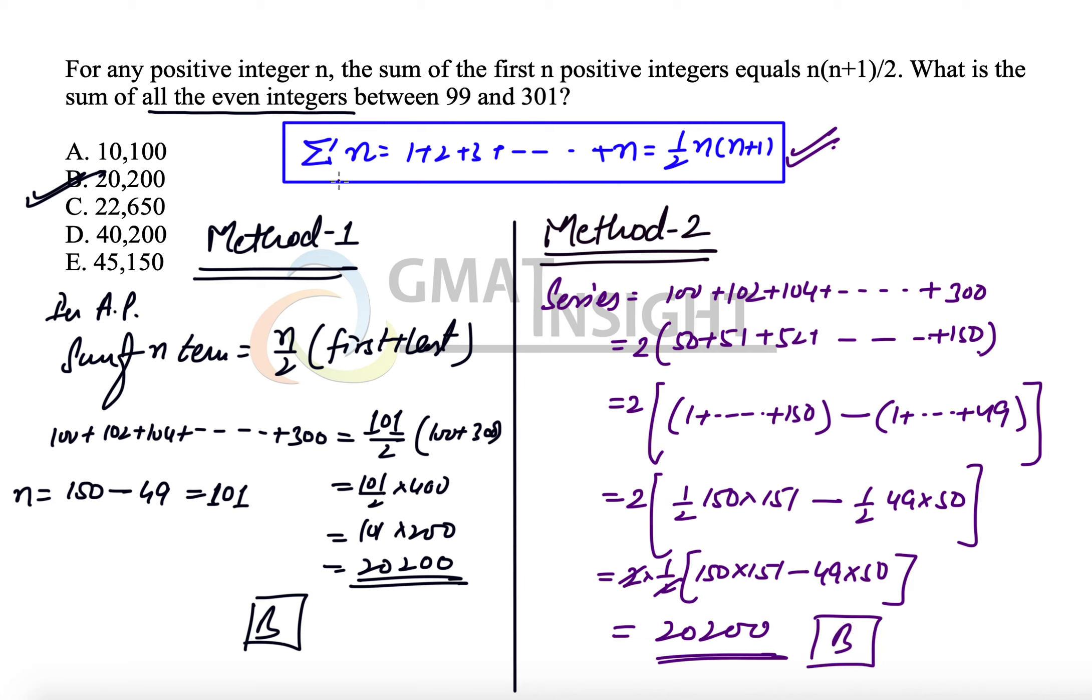I recommend personally that learning this basic principle that sum of n terms in any arithmetic progression is n/2(first term + last term) is more important and better way to answer such questions.